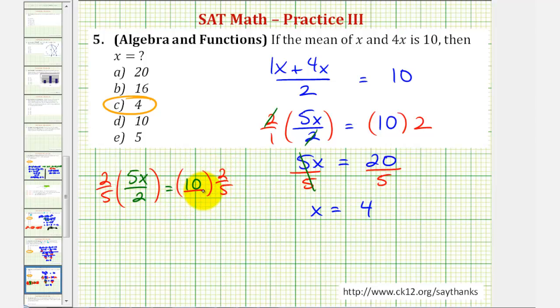So let's go ahead and write 10 as 10 over 1. Notice on the left side, we have 2 over 2 that simplifies to 1, as well as 5 over 5 that simplifies to 1, leading us with x. And on the right side, notice that 5 and 10 will simplify. There's 1 five in 5 and 2 fives in 10.